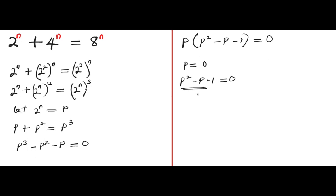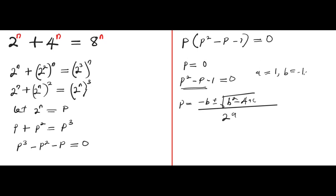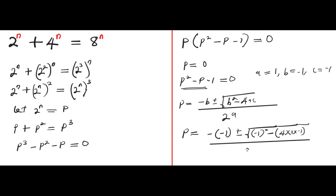So let's go ahead and solve it using the quadratic formula. We have p equals negative b plus or minus the square root of b squared minus 4ac, all divided by 2a. From the equation p squared minus p minus 1 equals 0, we have a equals 1, b equals negative 1, and c equals negative 1. Let's substitute these values into the quadratic formula.